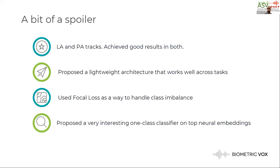Our second finding is we use focal loss as a way to handle class imbalance — an idea borrowed from the computer vision field. And then we propose what we think is a very interesting one-class classifier on top of neural network embeddings.